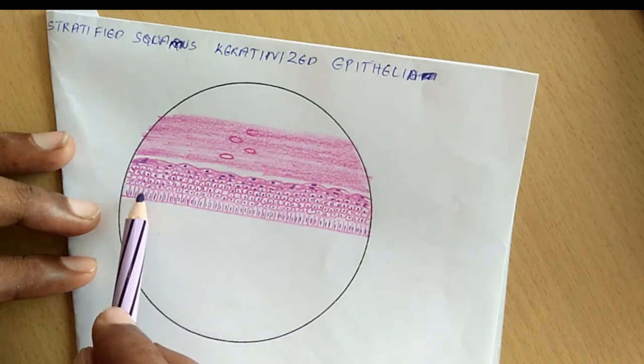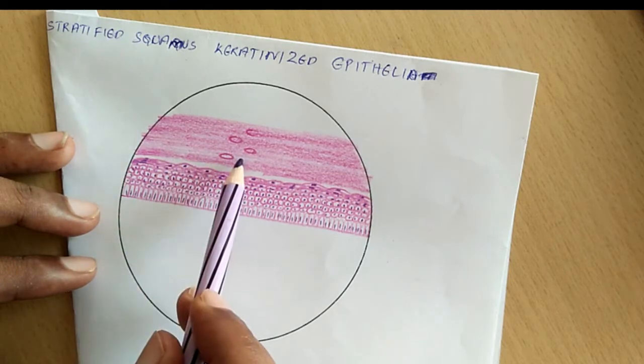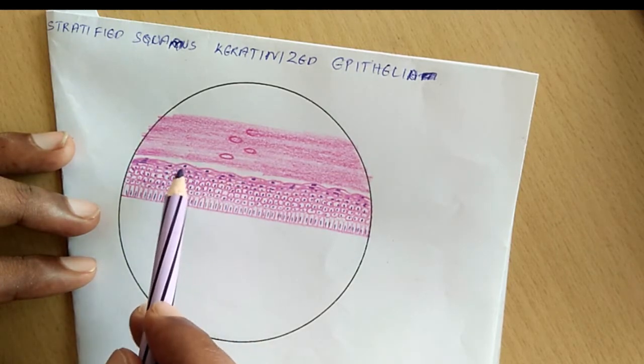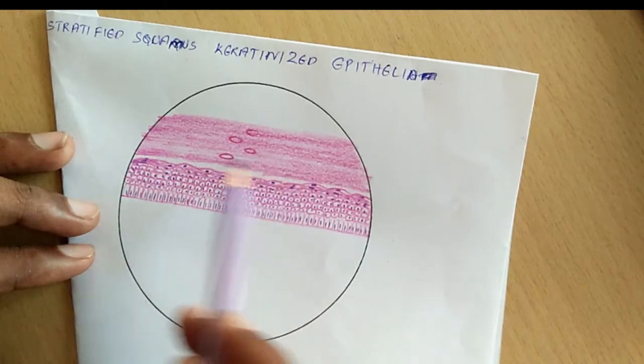Stratum basale is also called as stratum germinativum, because here the cells are produced. And at the top, the cells are getting died off, or shed off from the skin in this area.